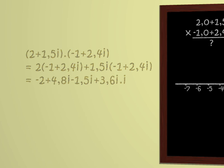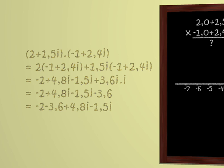negative 2 plus 4.8i minus 1.5i plus 3.6i times i. But recall that i squared is negative 1, since we invented i for this purpose. This gives us negative 2 minus 3.6, etc. Let's clean up a bit. We find negative 2 minus 3.6 plus 4.8i minus 1.5i. That's negative 5.6 plus 3.3i.